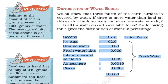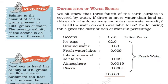According to the distribution table: Oceans hold 97.3% — this is saline water. All the rest are freshwaters: Icecaps 2.0%, Groundwater 0.68%, Freshwater lakes 0.009%, Inland seas and salt lakes 0.009%, Atmosphere 0.0019%, Rivers 0.0001%. The total is 100%.